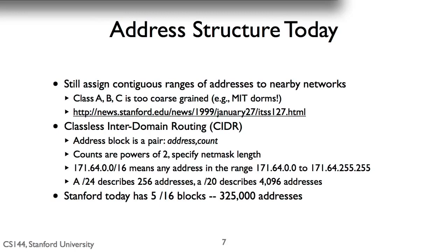While classes A, B, and C are simple, we quickly found out they were not flexible enough. For example, both MIT and Stanford received one of the first class A address blocks — over 4 million addresses. For a while, MIT would give each of its dorms the equivalent of a class B — 65,000 addresses for a few hundred people at most. When IP addresses were plentiful, this wasn't a problem, but as their use increased, we needed a better allocation policy. Useful note: Stanford gave up its class A block in 1999; MIT still has its.